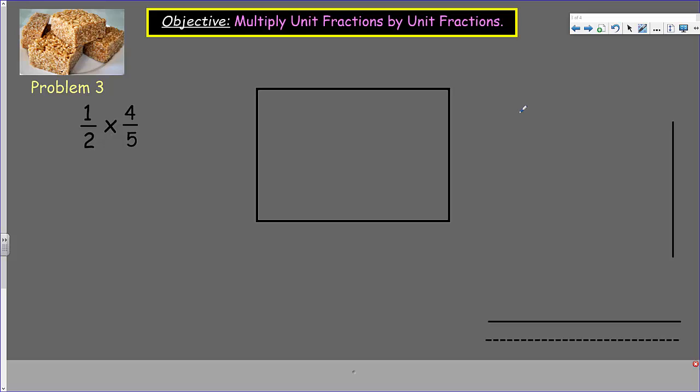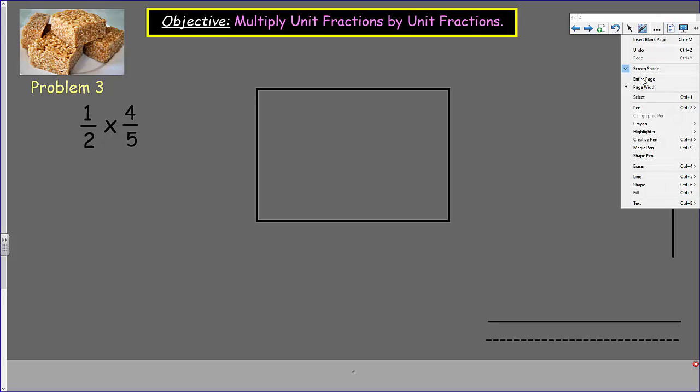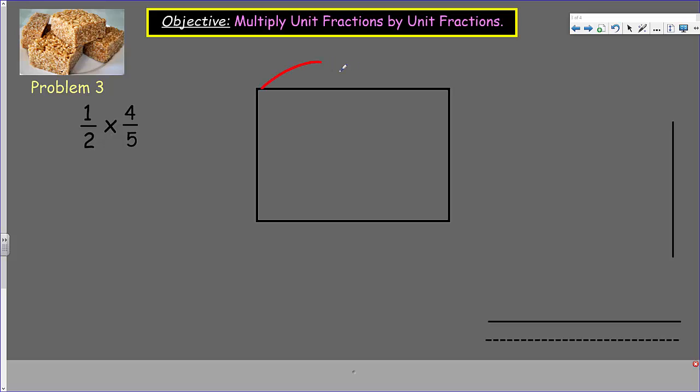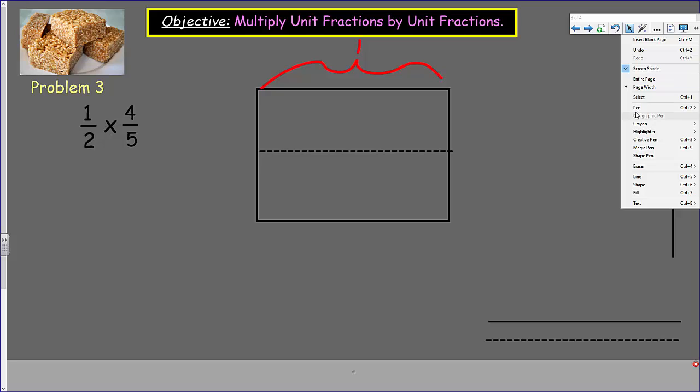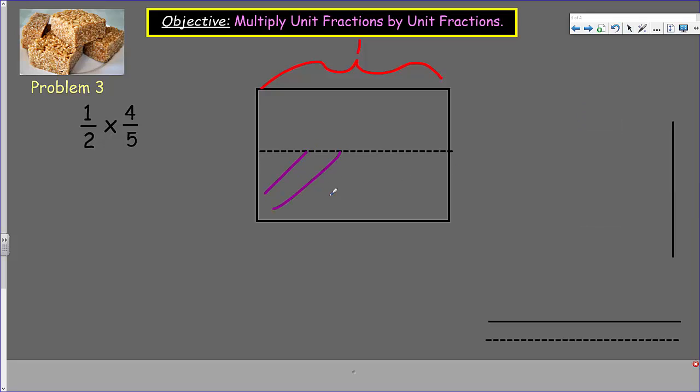Problem three. Ooh, I still see your wonderful crispy rice treats up there in the upper corner. Now, we have one-half times four-fifths. I'm going to go ahead and start modeling right away. We've been doing this, like, a lot of times. You guys are probably pros at this now, so I'm going to go really fast. So, of course, this is going to be our one-hole. Next to that, we're going to have our one-half. Let's take our dotted line, making him the one-half right there in the middle. Spit it in one-half.